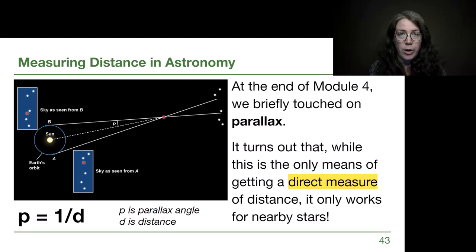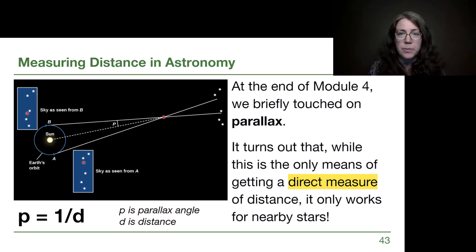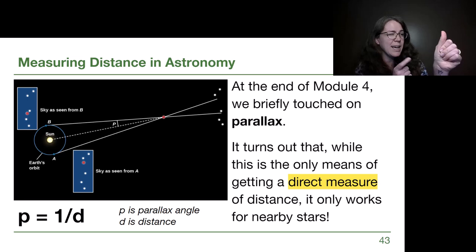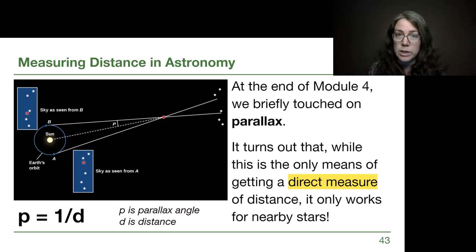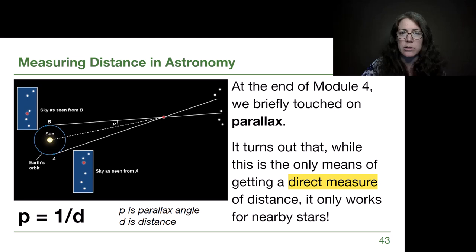As a couple of reminders, we have already learned about two different methods for determining distance. At the end of Module 4, we introduced the idea of parallax — that based on the different perspectives from parts of our orbit, we see nearby stars seem to shift against background stars. If we hold our thumb up and close one eye, we see it in one spot compared to the background, and when we shift which eye is open, it seems like our thumb moves even though it doesn't. The closer the star is, the more of a shift; the farther away, the smaller the shift, until we don't notice a measurable shift. Parallax only works for nearby stars, and it turns out this is the only method for direct measurement in astronomy.